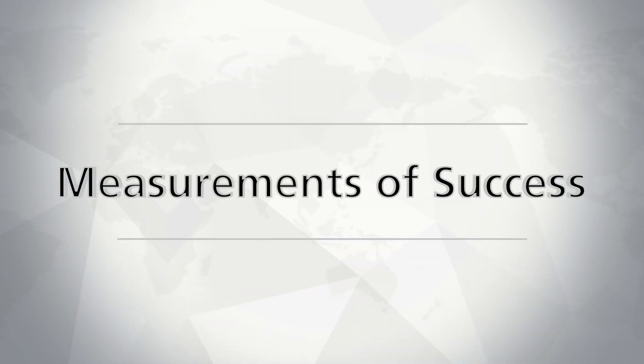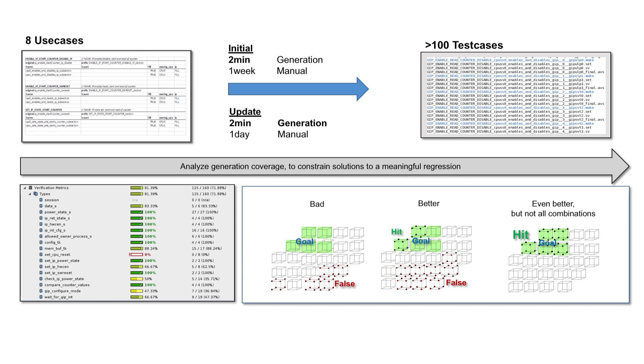How could I measure my success? I was able to generate a huge regression from a verification very fast. On top, I was able to reconfigure my verification for another SOC within two days, and on top, Prospect is integrated into vManager, which is another automation of my whole regression.